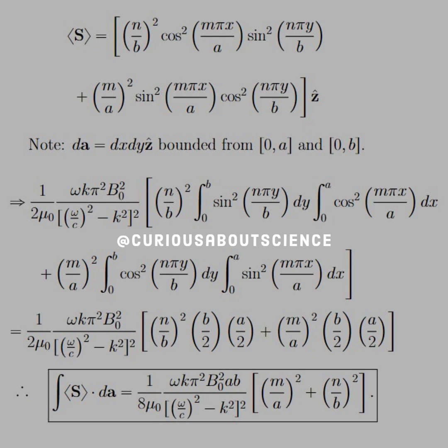Factor that out, and that's where we get the 1 over 8 mu. Everything else is good to go, and we just get the M over A squared plus N over B squared. Good to go there.